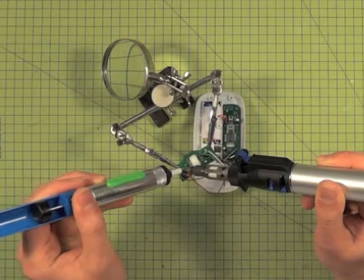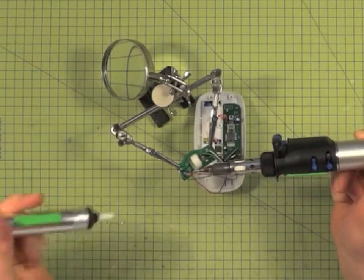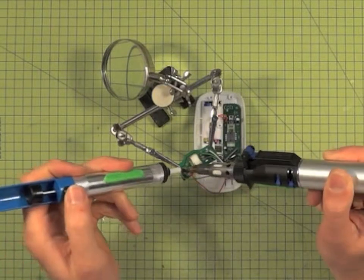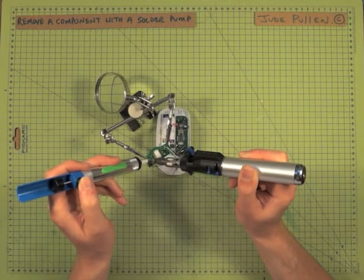Then when it's melted, suck, and then you can see it sort of spits out what you remove there. You might need to do this more than once depending on how much solder there is around the joint.